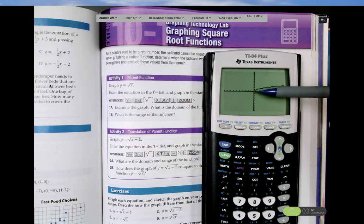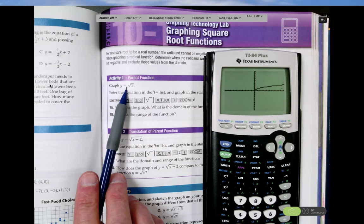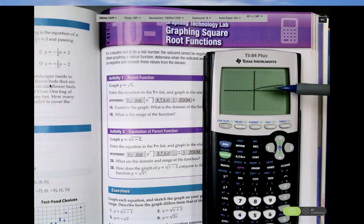You see that this is the parent function where y starts at 0, 0. And it's a positive because that's a positive in front of the radical. And the radicand is just x. So that's the positive parent function.